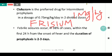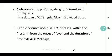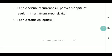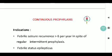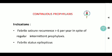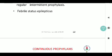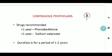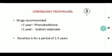Clobazam is available as both 5 mg and 10 mg tablets, to be tailored accordingly. Continuous prophylaxis is indicated when the child has more than 6 episodes per year despite intermittent prophylaxis, or if the child presented with febrile status epilepticus. For continuous prophylaxis, phenobarbitone or sodium valproate is preferred.